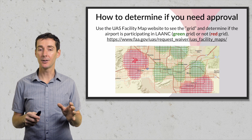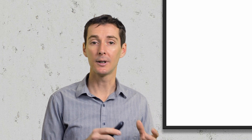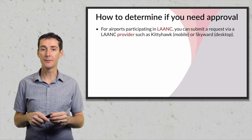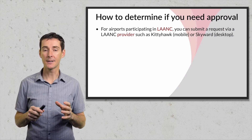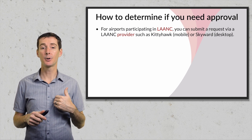It actually takes less than 90 days now, so you can get approval in a couple of days, but you still have to plan ahead. At the very end of this course in the bonus section, there are full videos explaining how the facility map works, how to get information from it, and how to submit approval via LAANC and via the Drone Zone. For airports that are part of LAANC, you can submit the request via a LAANC provider. There are different providers out there — the one I use is called Kitty Hawk, which is a mobile app available on your phone. You can also use the desktop version via Skyward — the company Skyward.io.